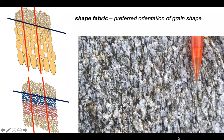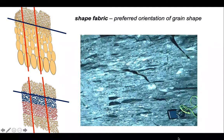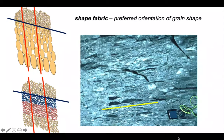This is called shape fabric, and it's defined by the preferred orientation of grain shapes. Here we can see an example where clusters of white material — quartz and feldspar — together with the darker mineral, are aligned. Here's another example from some rocks that started life as breccias where we can see the clasts are aligned. So these are a couple of examples of shape fabric defined by the orientation of the grain shapes.